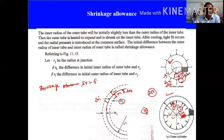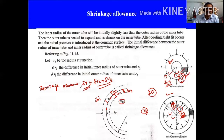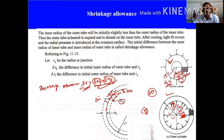Shrinkage allowance is: delta_r = delta_r_i + delta_r_naught. Our objective is: if you want to produce a given junction pressure, what should be the value of delta_r? You have to calculate both — delta_r_i is the decrease in diameter of the inner cylinder, and delta_r_naught is the increase in diameter of the outer cylinder. To calculate this, we find the strain at the junction point.